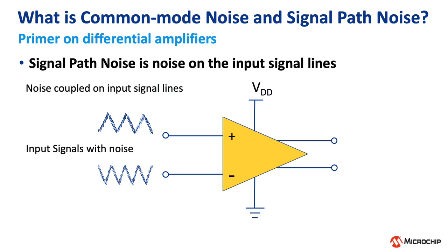Noise on the analog signal path that propagates to the input signal lines will similarly cancel out when using a differential ADC, provided that we are using a standard differential signaled sensor output in the form of a twisted pair of wires, since once again the noise on both of those inputs will be equal.